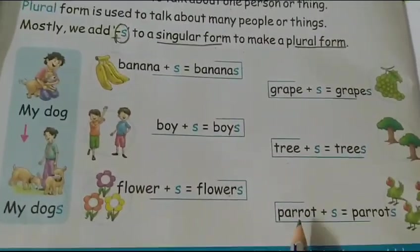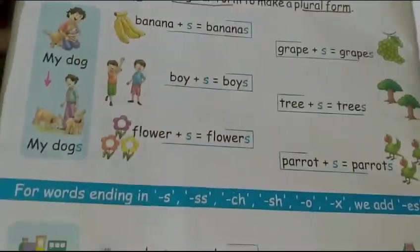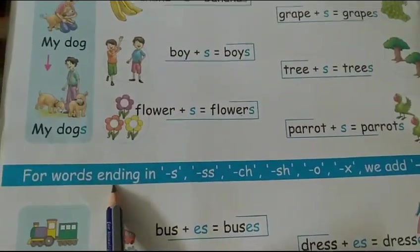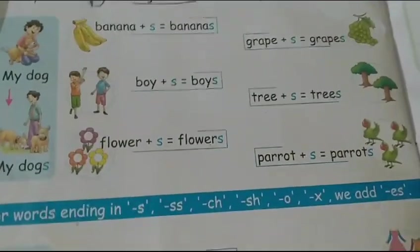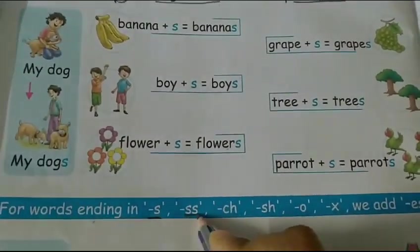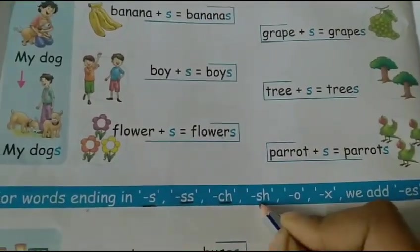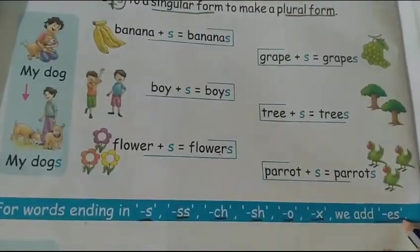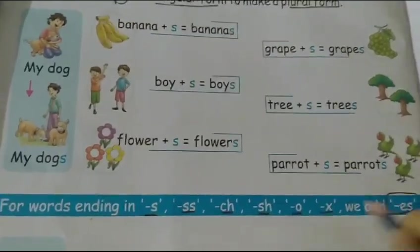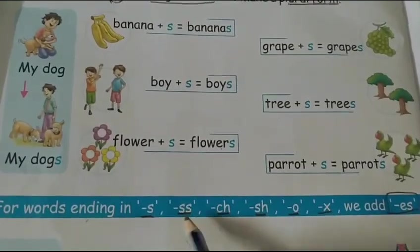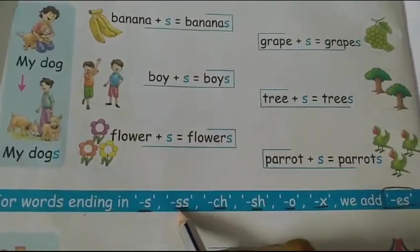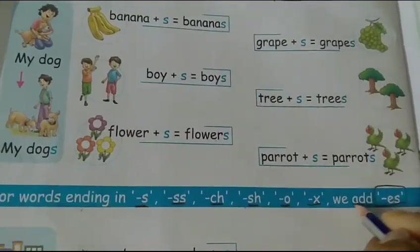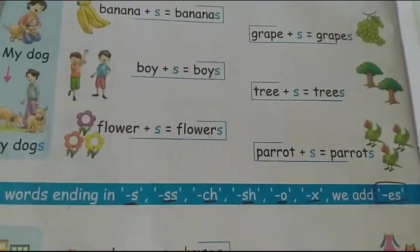Here you have to read this line: for words ending in 's', double 's', 'ch', 'sh', 'o', or 'x', we add 'es'. We add 'es'. I will show you some examples also.